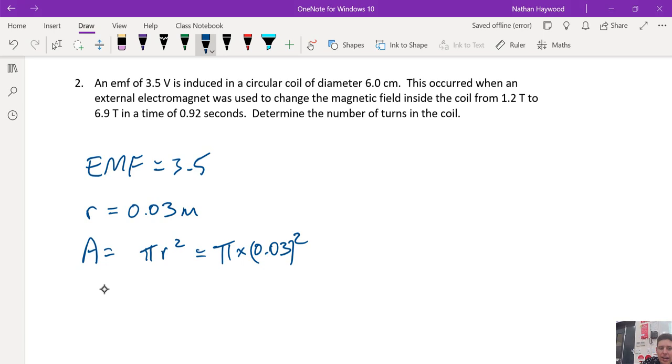All right. Next, we've got change in time. What's the change in B? B final minus B initial: 6.9 minus 1.2.